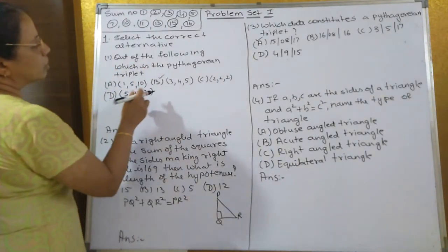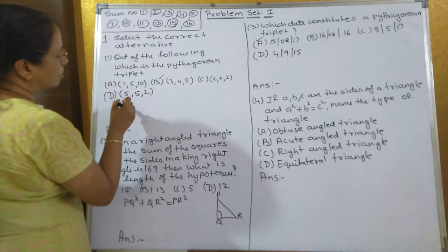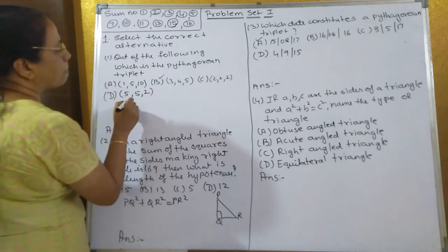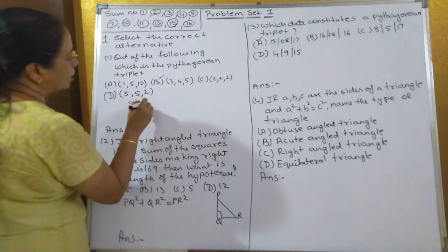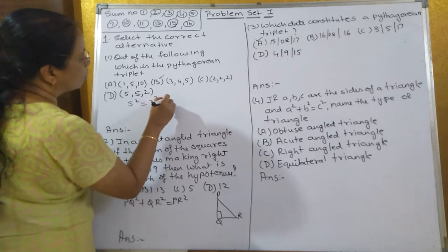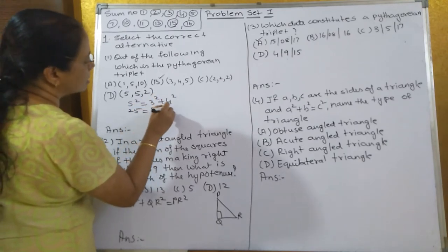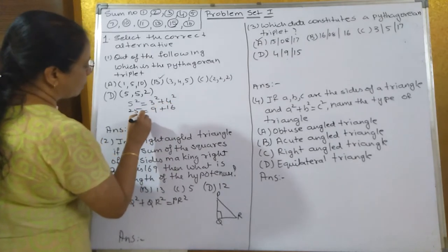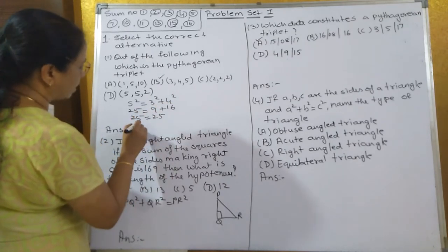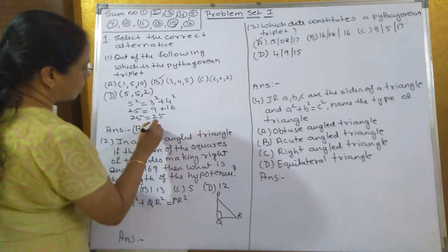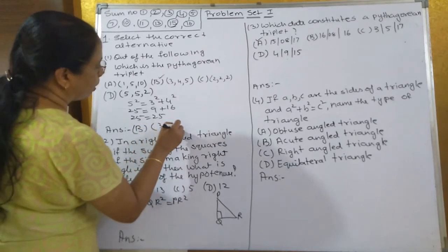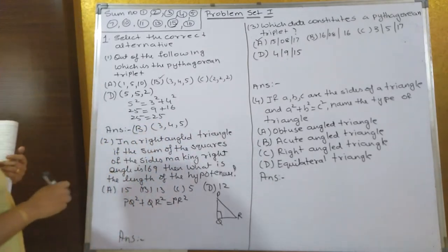B is a Pythagorean triplet. If you take 5², it will be equal to 3² + 4². That is 25 = 9 + 16. 25 = 25, so the correct option is B, that is 3, 4, and 5. This is the Pythagorean triplet.